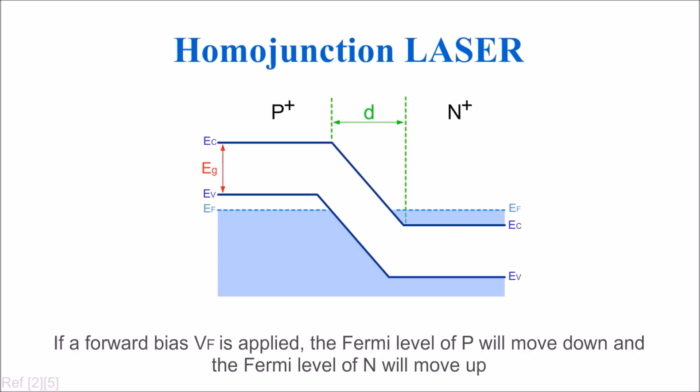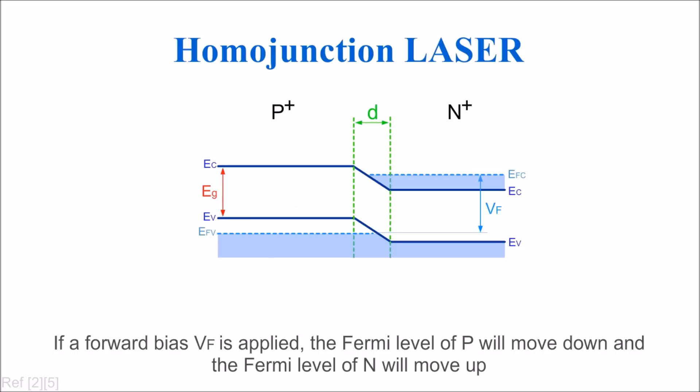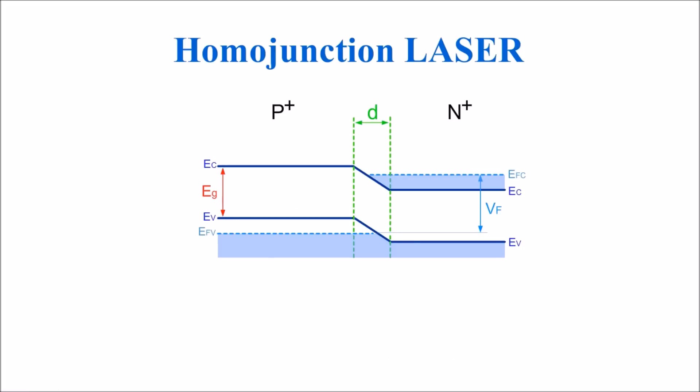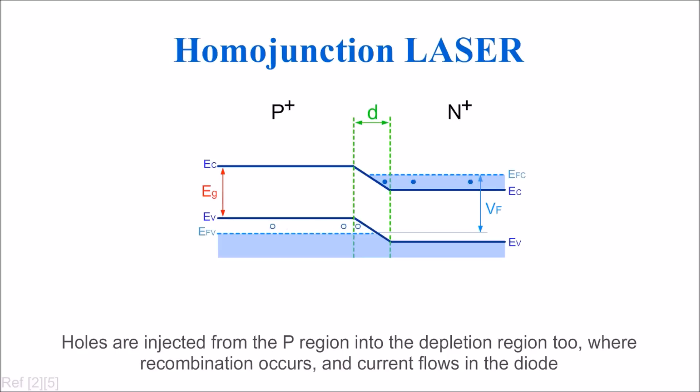If a forward bias Vf is applied, the Fermi level of p will move down and the Fermi level of n will move up. The depletion region d will be narrower. Electrons are injected from the n region into the depletion region. Holes are injected from the p region into the depletion region where recombination occurs and current flows in the diode.